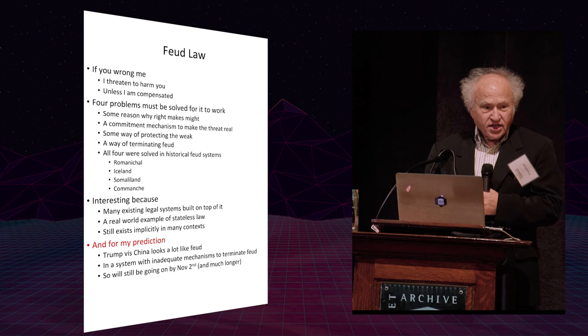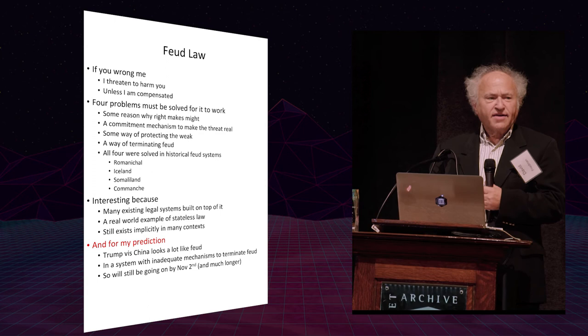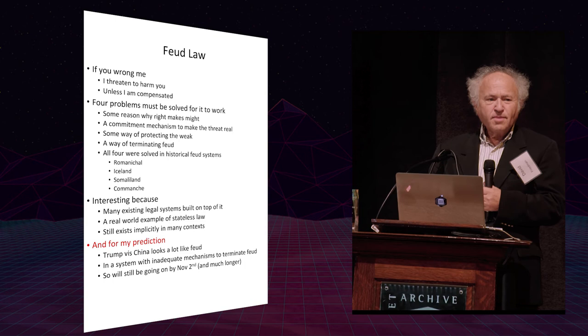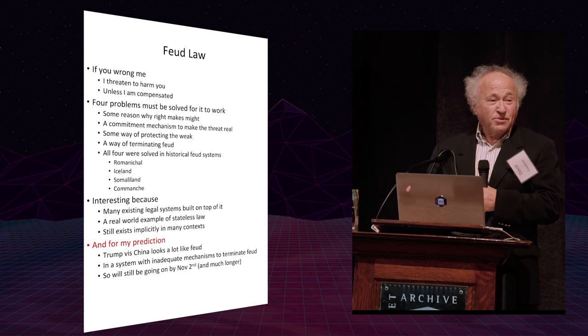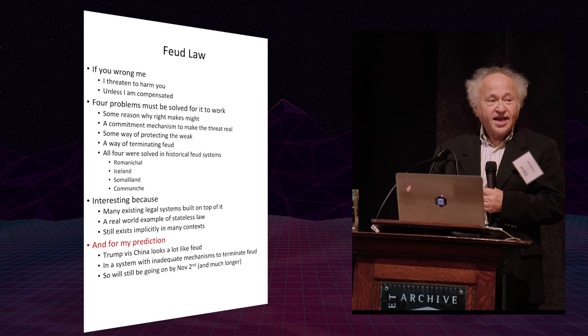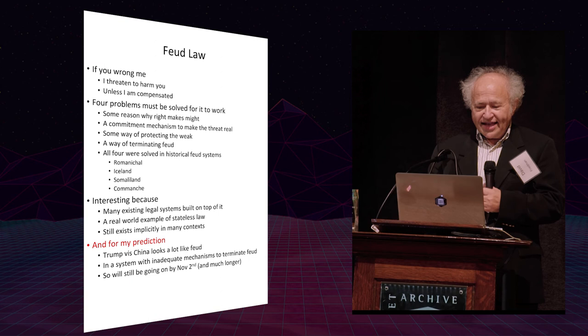And the standard way of doing that is to have an arbitrator. To have some powerful person who many people trust. Both sides go to him and say, we'll let you decide this case. Now, if he decides against me, I can back down without looking like a wimp. Because you can only get away with wronging me if the arbitrator will rule for you, and next time he won't. And if I don't accept the ruling, I've now got a new and powerful enemy on the other side, which I don't want to do. So that's a way in which feuds got terminated.